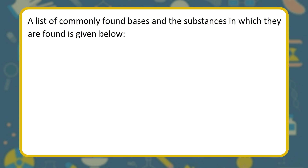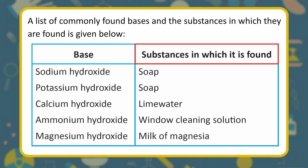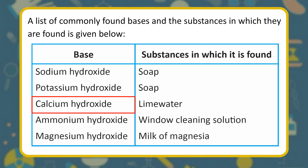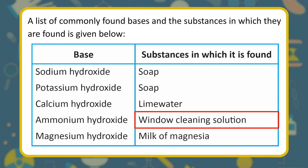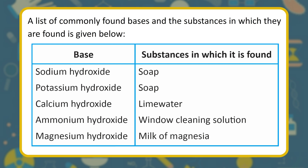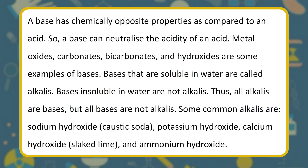Some commonly found bases: sodium hydroxide and potassium hydroxide are found in soap; calcium hydroxide in lime water; ammonium hydroxide in window cleaning solution; magnesium hydroxide in milk of magnesia. A base has chemically opposite properties compared to an acid, so a base can neutralize the acidity of an acid. Metal oxides, hydroxides, and carbonates are examples of bases.